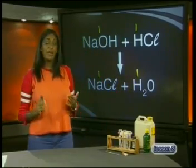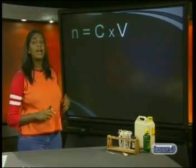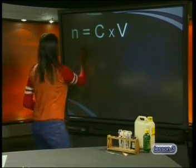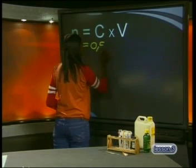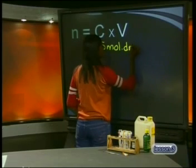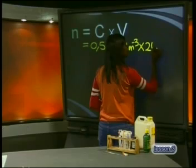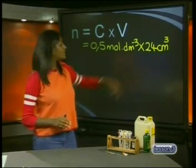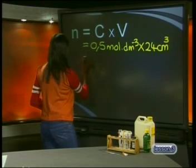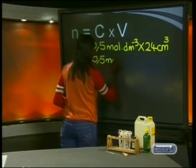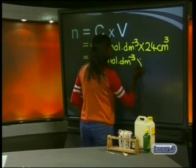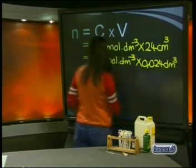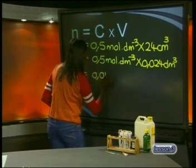Step 3: Apply the formula N equals C multiplied by V to find the number of moles present. From the question, we calculate the moles of acid present, which is 0.5 mol. Our volume is 24 cm³. Remember to change the units of volume from cm³ to dm³. We now have 0.5 mol multiplied by 0.024 dm³, which gives us an answer of 0.012 mol.